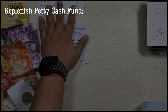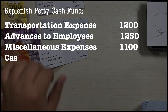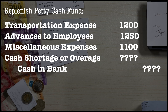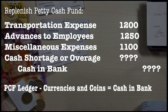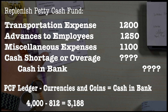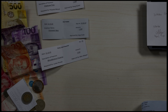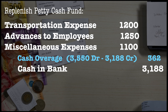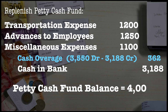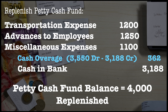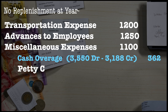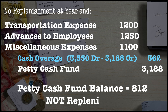Using the journal entry method: the replenishment entry debits transportation expense, advances to employees, and miscellaneous expense. Cash in bank is credited for P4,000 (set petty cash balance) minus P812 in coins and currencies, equaling P3,188. For the entry to balance, there must be a credit of P362 representing our cash overage. This entry does not affect our Petty Cash Fund balance, but it does decrease net income and decreases our overall cash balance because we credited cash in bank. If there is no replenishment entry, instead of crediting cash in bank, we credit Petty Cash Fund for the same amount of P3,188, with the same cash overage remaining.